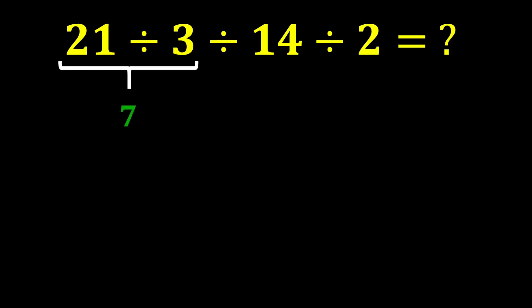21 divided by 3 gives us 7, and 14 divided by 2 gives us 7. In the end, 7 divided by 7 gives us 1.